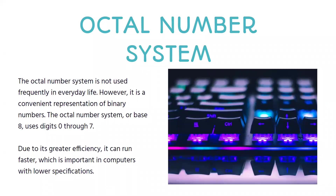Let's keep going with another number system. This number system is called octal. It's not used frequently, but it's a convenient representation of binary numbers. The octal number system uses base eight with the digits zero through seven. It has greater efficiency, which means it can run faster — and this is important in computers with lower specifications.